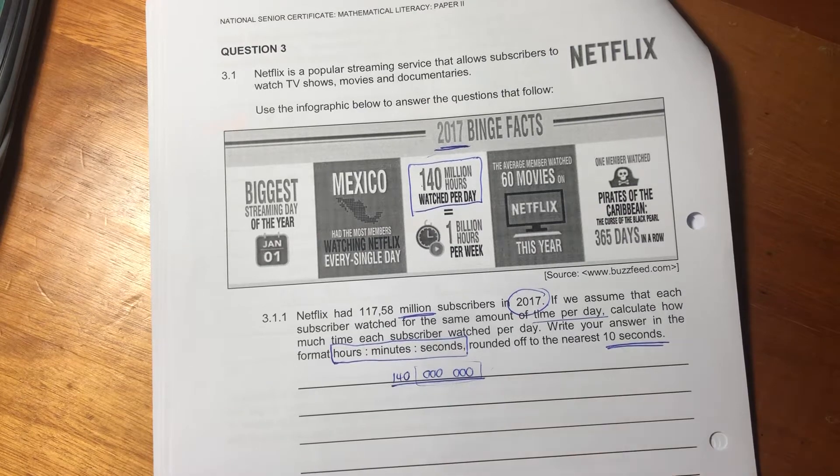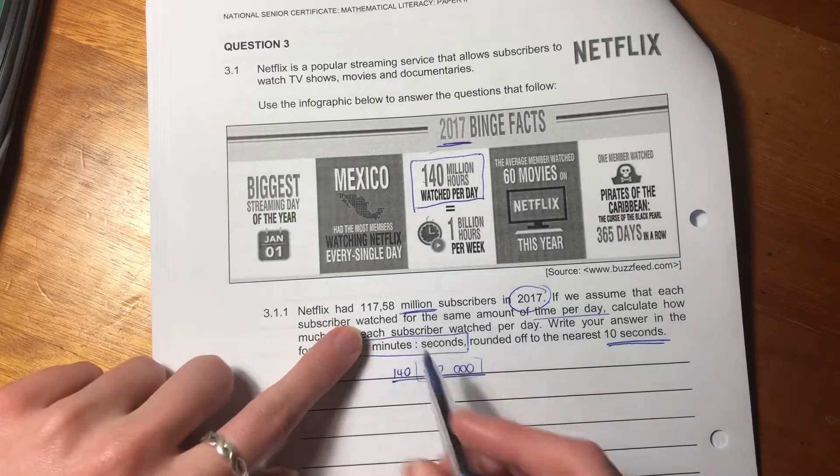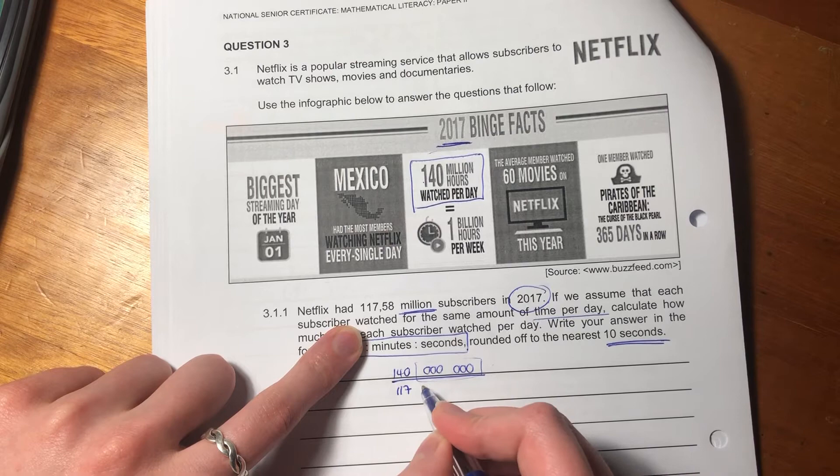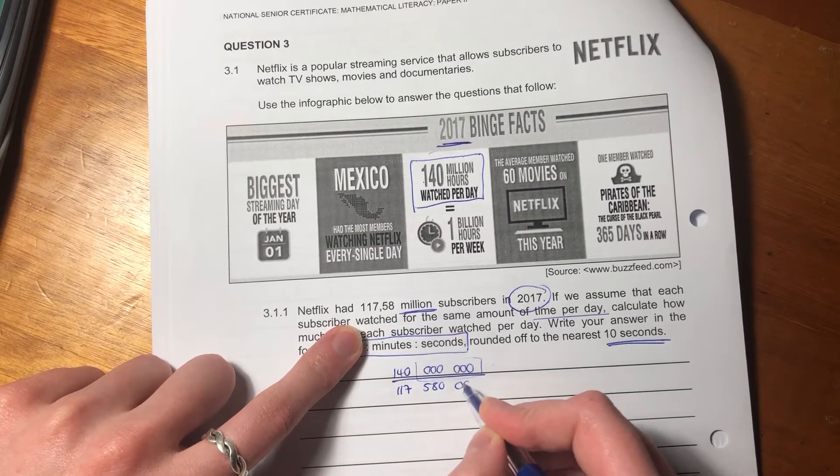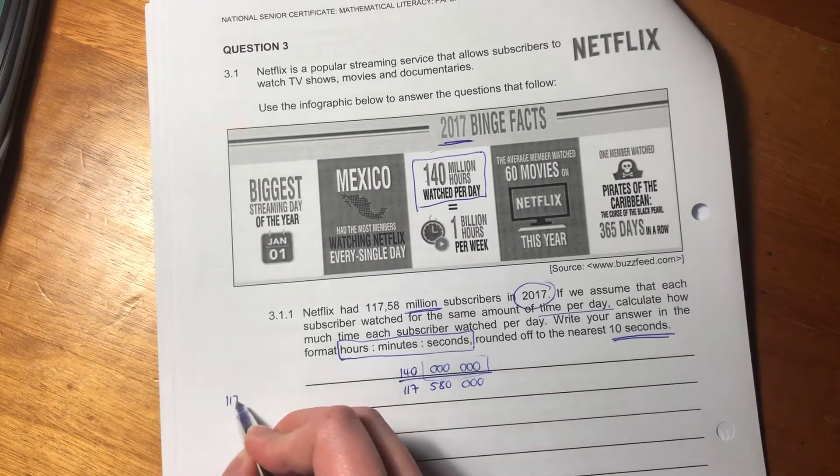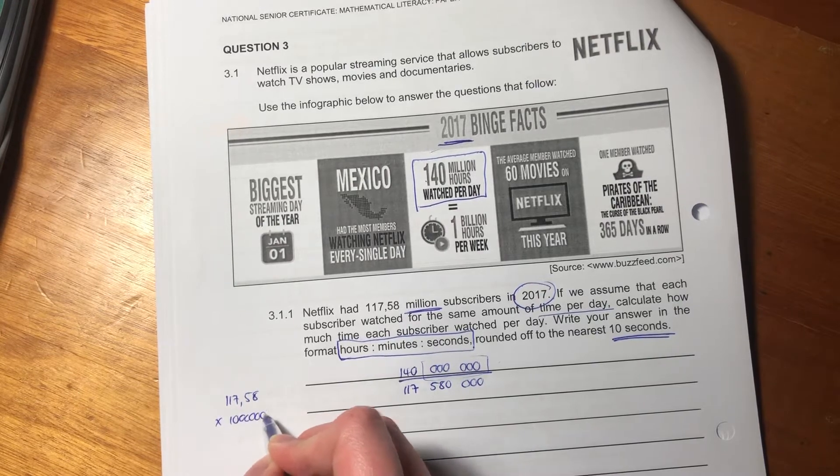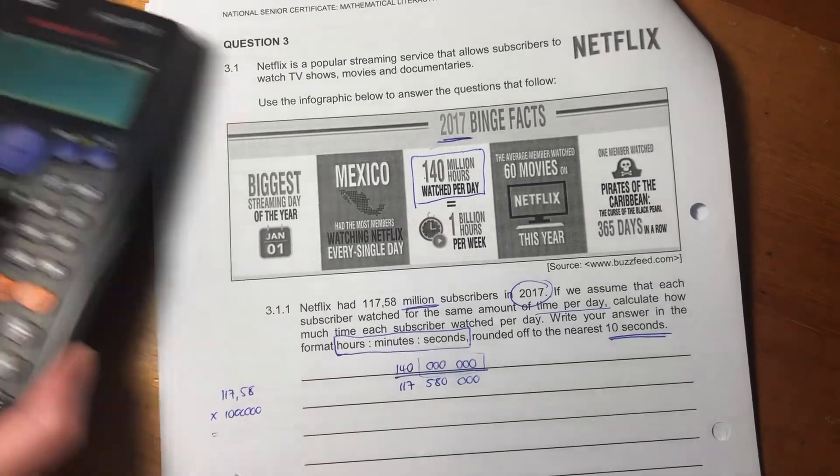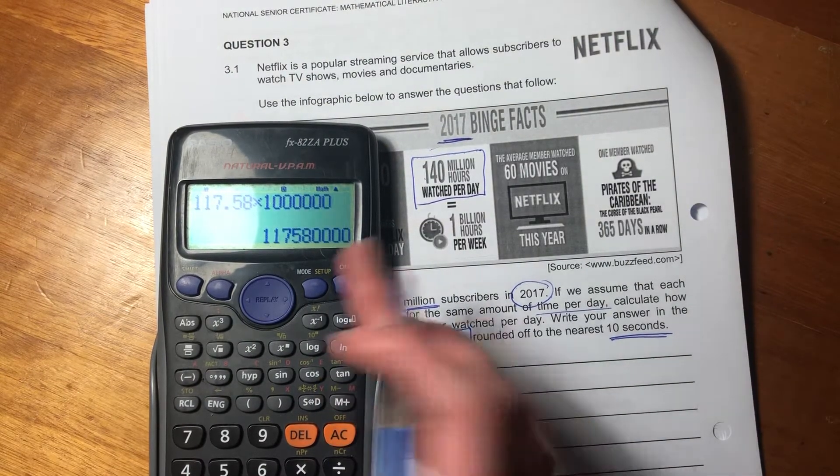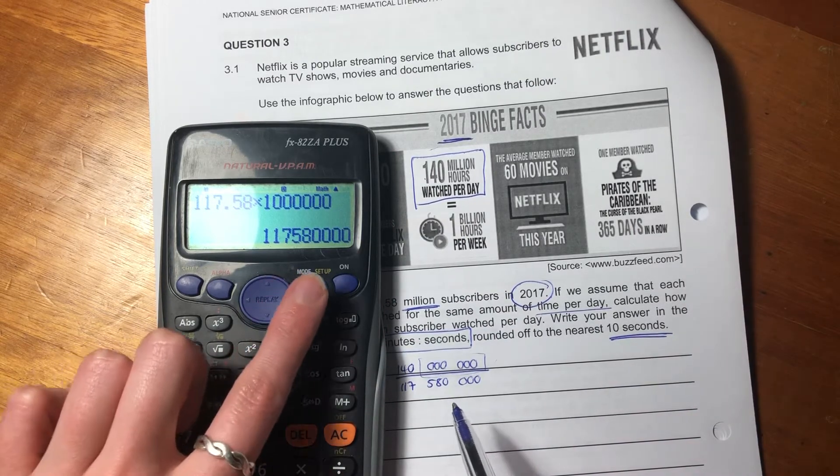Then we're going to divide it by the number of people who actually contributed towards those many hours of watching, which is 117.58 million. So it's 1, 1, 7, 5, 8, 0, 1, 2, 3. Now, you could be saying, how on earth did you get to this number? Well, you say 117.58 times a million. That's six zeros. Put that into your calculator. And that's your answer. So I just did that in my head, but you can do it in your calculator.